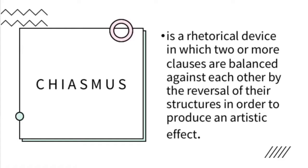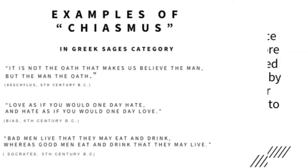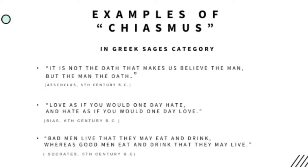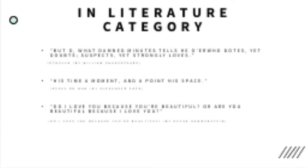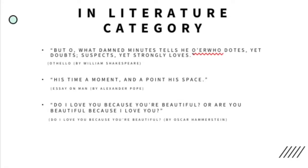Chiasmus is a rhetorical device in which two or more clauses are balanced against each other by the reversal of their structures in order to produce an artistic effect. Here are some examples of chiasmus: 'It is not the oath that makes us believe the man, but the man of the oath.' Here are examples of chiasmus in the literature category.